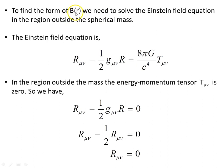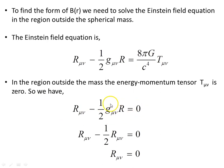To find the form of B as a function of R, we need to solve the Einstein field equation in the region outside the spherical mass. In that region, the energy-momentum tensor T_μν is 0, since there is no matter or energy outside. This gives us the Ricci tensor equal to 0 in this region.